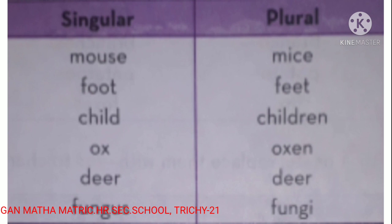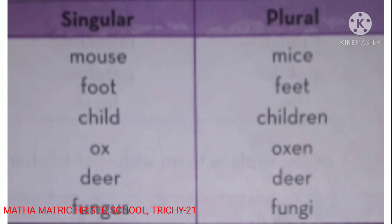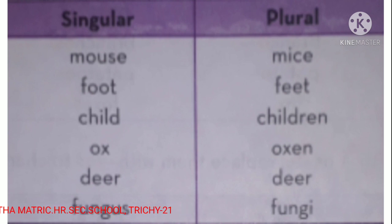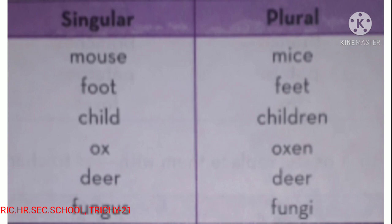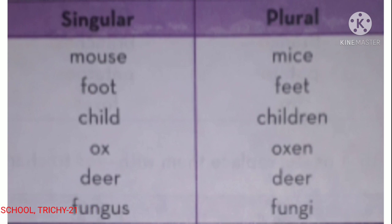Some nouns do not follow a particular rule — we write them differently. For example: mouse → mice, foot → feet, child → children, ox → oxen, deer → deer, fungus → fungi.